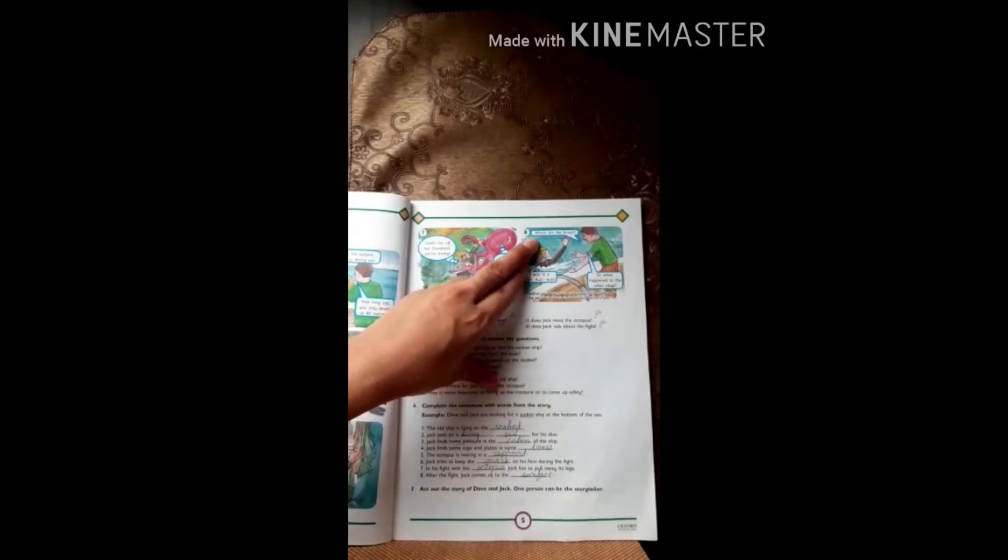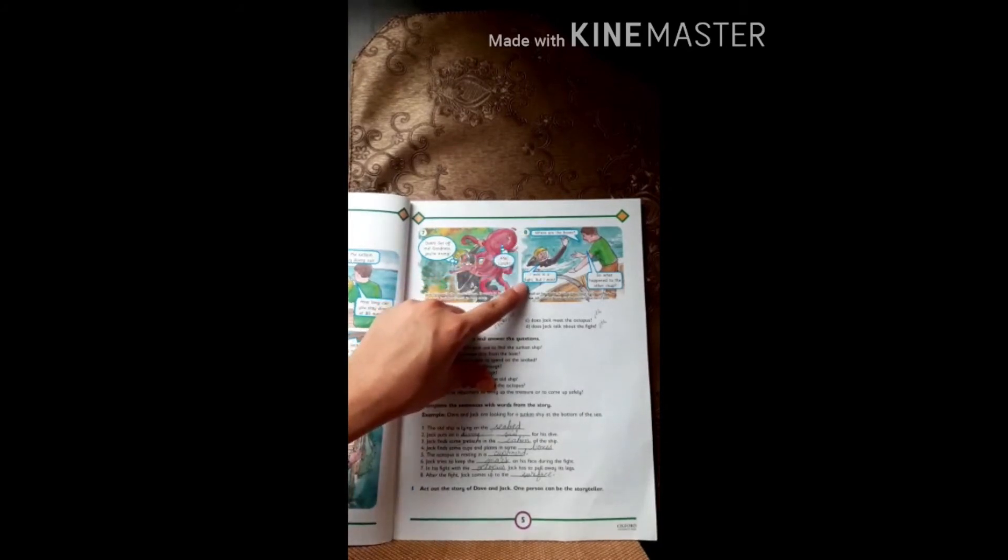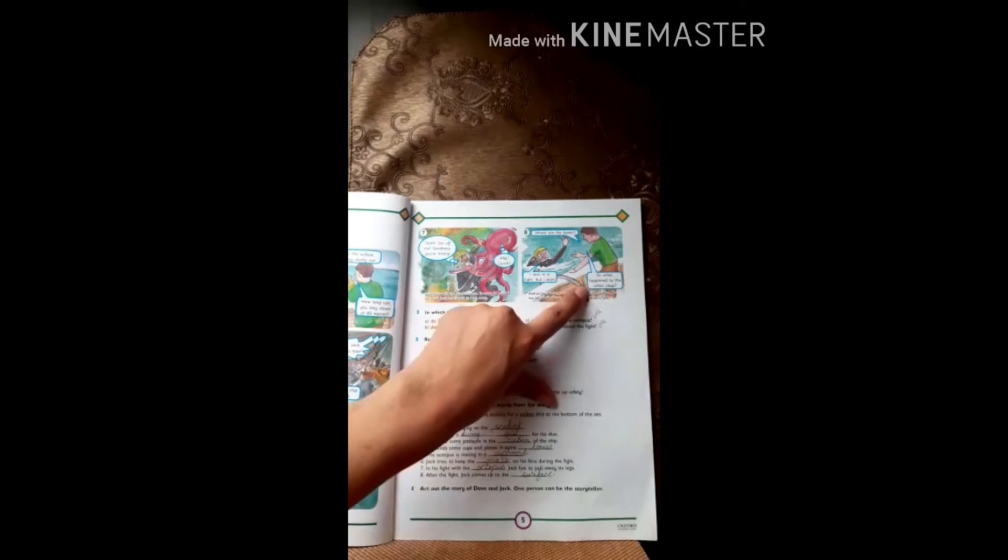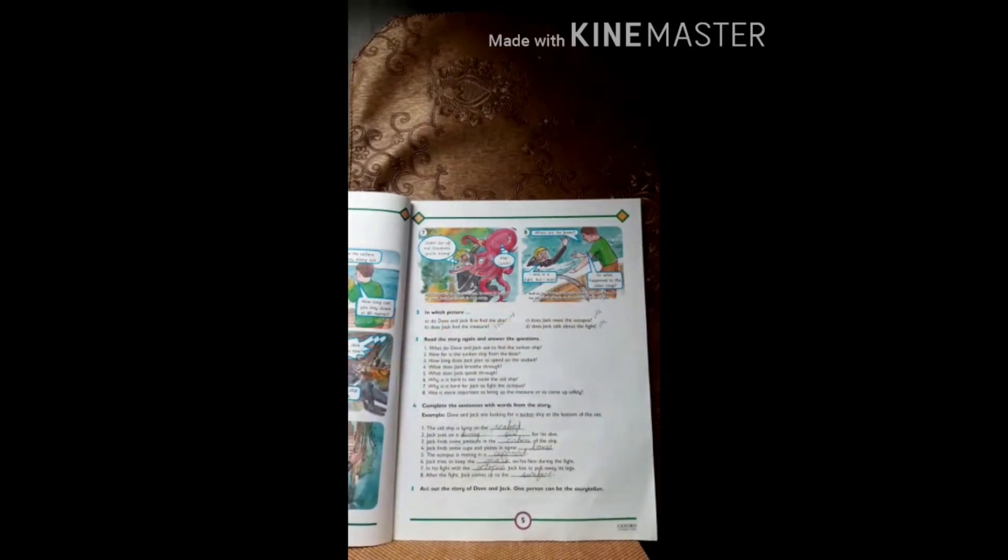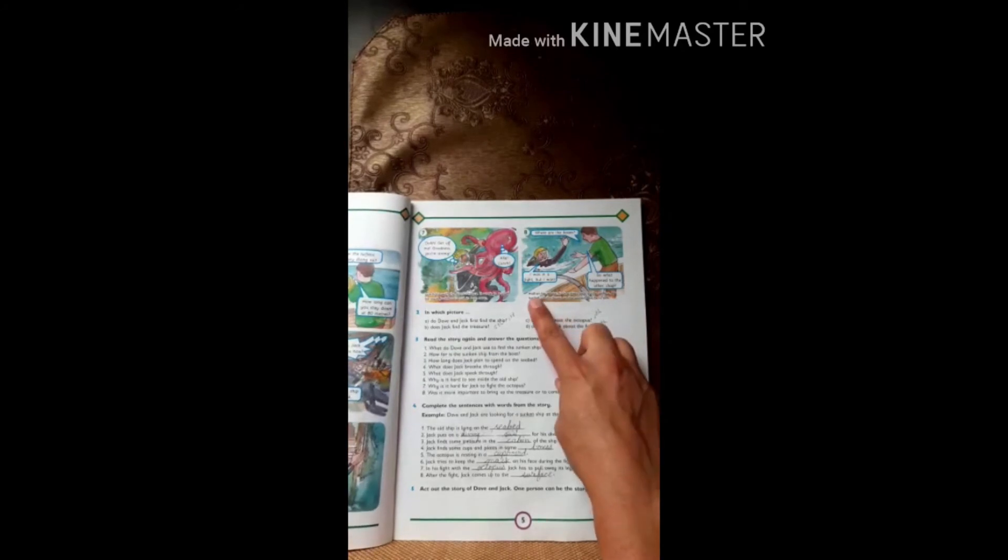Picture number eight. Where are the boxes? Dave is asking where are the boxes. Jack is replying I was in the fight but I won. Dave asks so what happened to the other chap? Half an hour later, when Jack arrives back at the surface, he has left all the boxes on the sea bed but he is safe because he saved his life from the octopus. So he left the boxes there and came back.